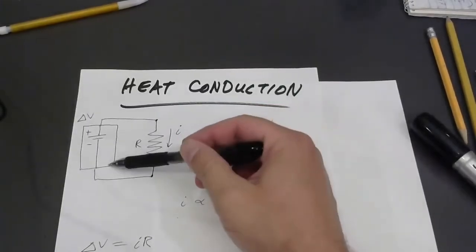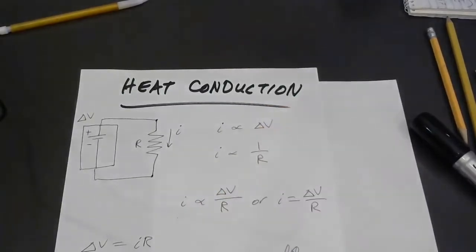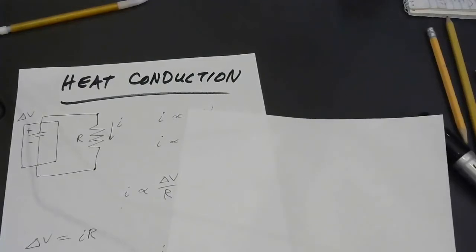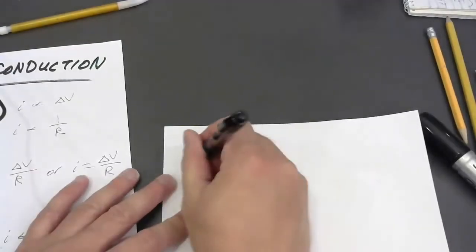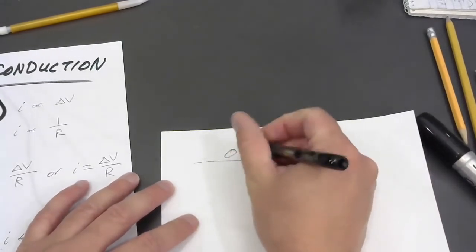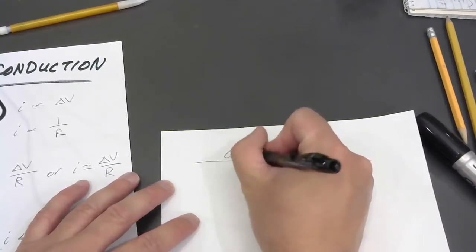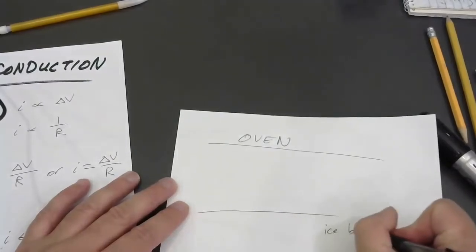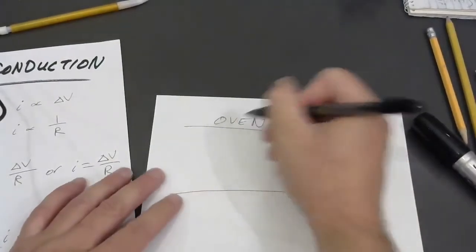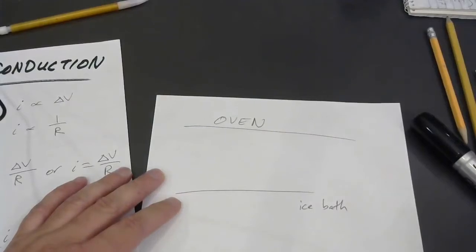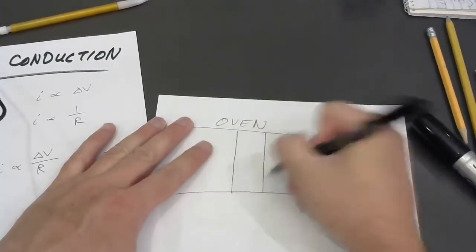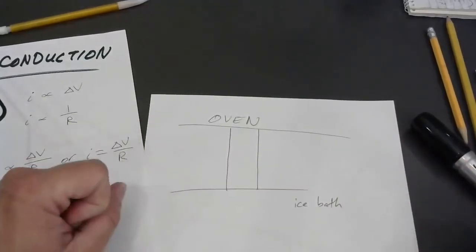Instead of putting an electrical potential across an electrical resistor, let's put a temperature difference across something that's got what you might call thermal resistance. So, I'll call this an oven. Let's say you've got some kind of oven up here and down here is an ice bath or just ice water and maybe you've got a rod made out of copper or some other metal. And you place it between these two reservoirs of heat.